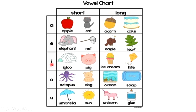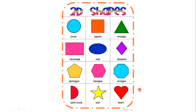I — ice cream, kite. O — ocean. U — unicorn, glue. And now the shapes. Repeat after me: circle, square, triangle.